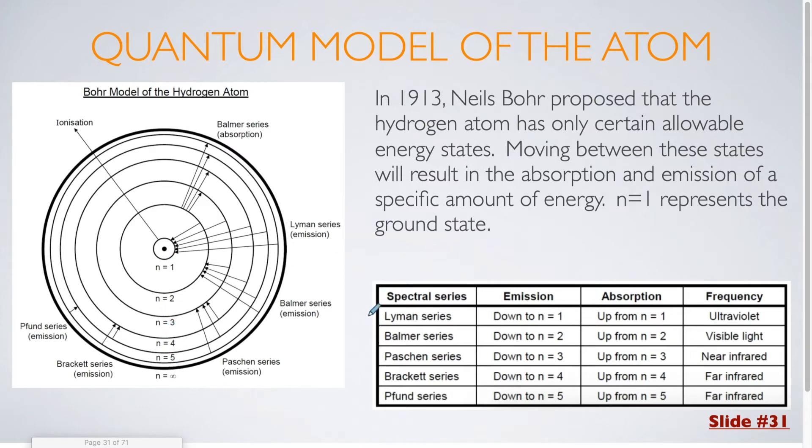Over here we see a number of different series which are related to where the electron is coming back down. If an electron is going up to an excited state and returning back to the ground state, N equals 1, that is known as the Lyman series. The frequency here would be within the ultraviolet. The Balmer series is where electrons are excited but then return back to N equals 2, giving off energy within the visible light part of the electromagnetic spectrum. If the electron returns to N equals 3, that is the Paschen series in the near-infrared. We also have the Brackett and Pfund series.